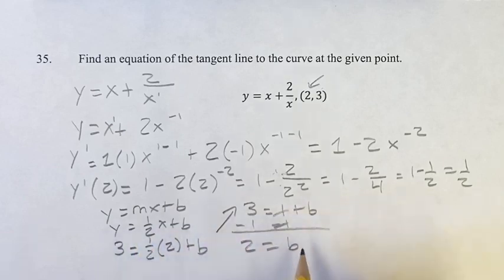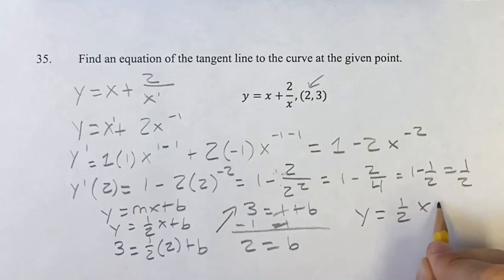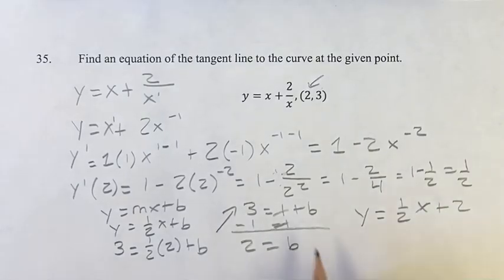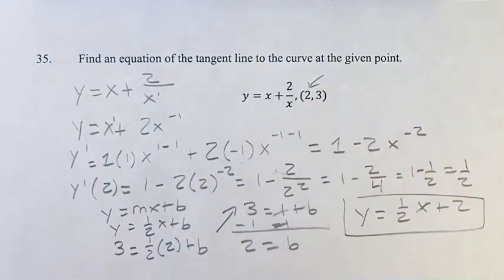So now, we know m, we know b, and we can say our equation is y is equal to 1 half x plus 2. That is going to be the equation of the tangent line to this curve at this point.